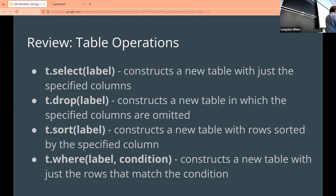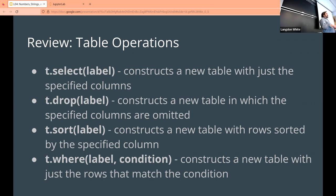You have select, which is kind of what it sounds like — it creates a new table with just the specified columns. Then you have drop, which gives you one that doesn't have certain columns. Then you have sort, which is sorting by a particular column. You can reverse the sort by passing the second parameter descending equals true. By default it will sort ascending and you can switch it. You also have where, which will pull out certain rows that match whatever condition you provide.